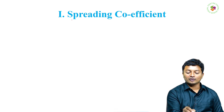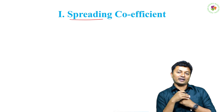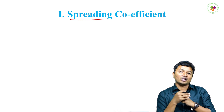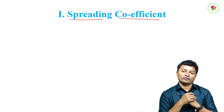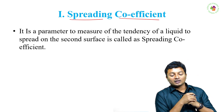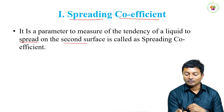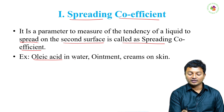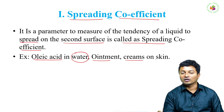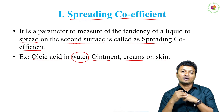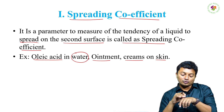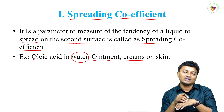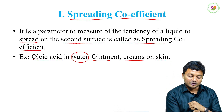First we will start with spreading coefficient. Spreading coefficient means if any substance is spreading on another surface, that entire phenomenon is known as spreading, and the amount of spreading of one molecule on another molecule's surface is considered as the coefficient. As per the definition, it is a parameter to measure the tendency of a liquid to spread on a second surface. Example: oleic acid in water, or ointments and creams on the skin.